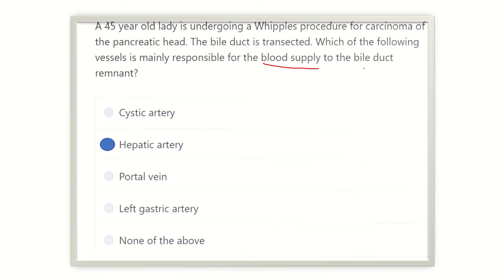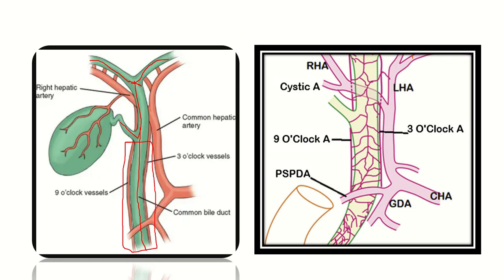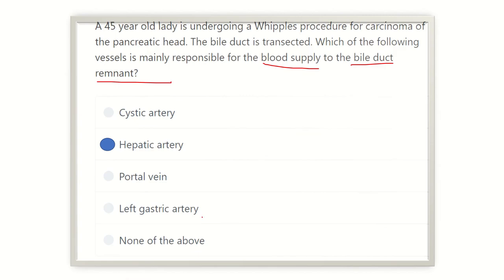The hepatic artery supplies blood to the bile duct and the bile duct remnant. The remnant is present in the upper part, but regardless of the level, all parts of the common bile duct receive blood supply from the hepatic artery. Thank you.